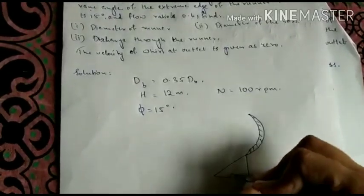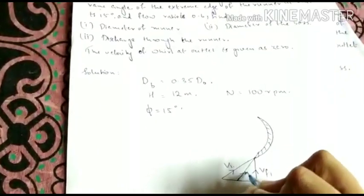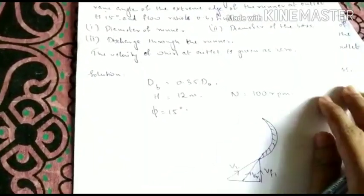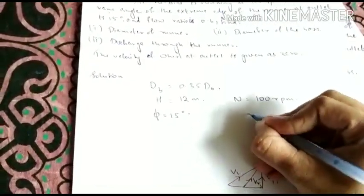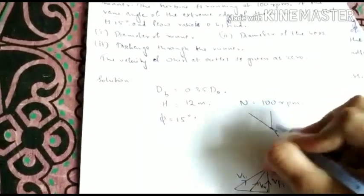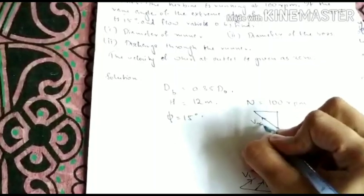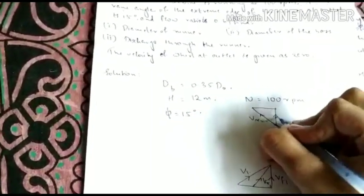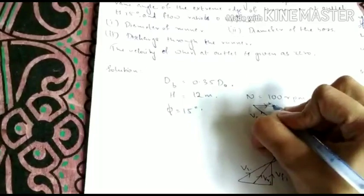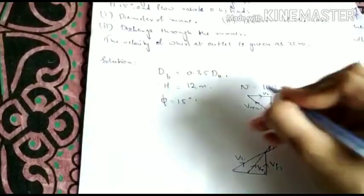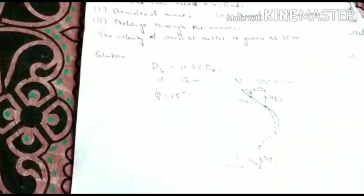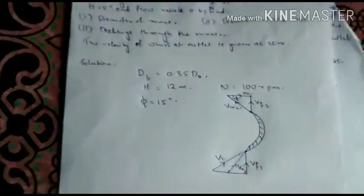The velocity inlet triangle. That is VF1. So this is V1. This is the relative velocity Vr1. Now we have an outlet triangle. In that this is the relative velocity. This is VF2. And this is U2. This is phi.